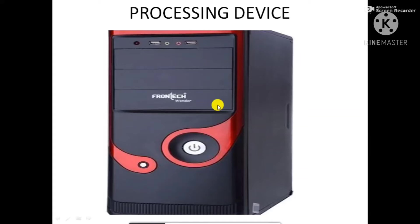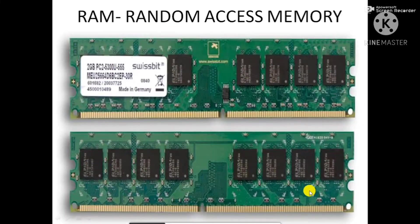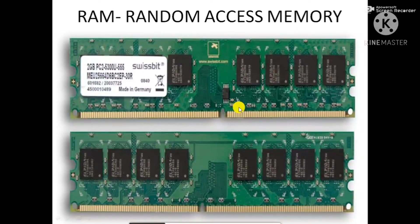This primary memory is divided into RAM or ROM. Now let us see what is RAM and ROM. This is a RAM. The full form of RAM is Random Access Memory. RAM is the temporary memory of the computer that holds instructions and data. When the computer is switched off, the contents of the RAM are lost.